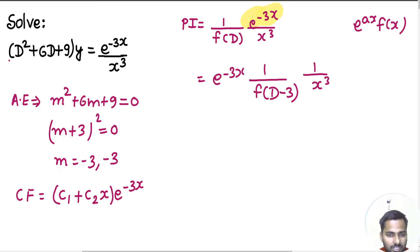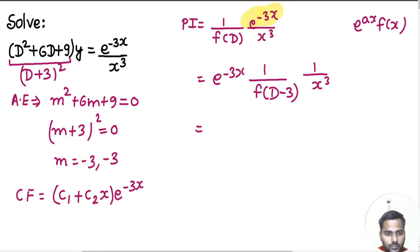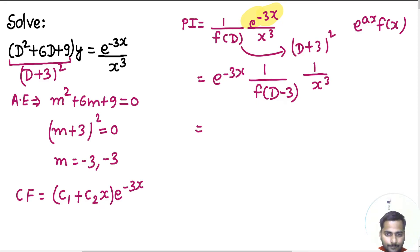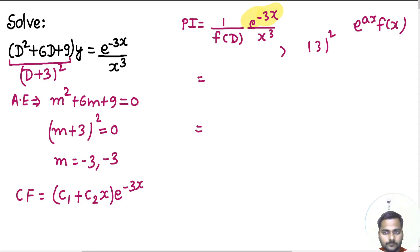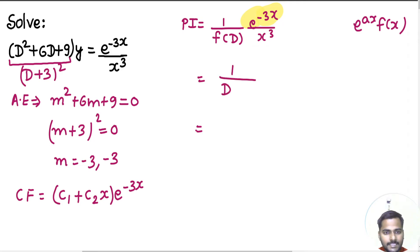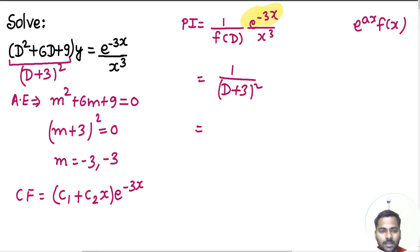Now you can either write the function of D as it is, or this is the same as writing (D + 3) whole square. So if I write this as (D + 3) whole square — here it was (D + 3) whole square. You can also write it as D squared plus 6D plus 9, and wherever you get D, replace that by D minus 3. That will be a bit more calculative with one or two more steps, but this is the easier approach.